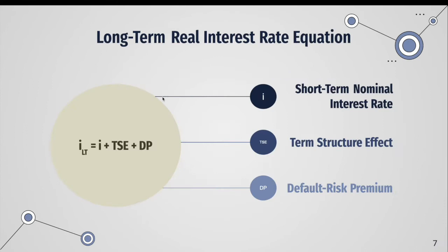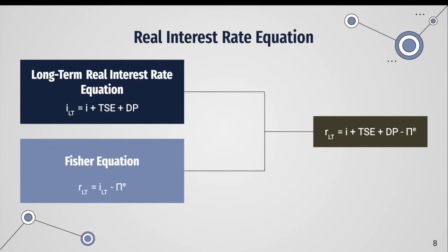With both of those factors, we have the long-term real interest rate equation, where r is the short-term nominal interest rate (i) plus the term structure effect plus the default risk premium. Using this, you can derive the real interest rate equation.